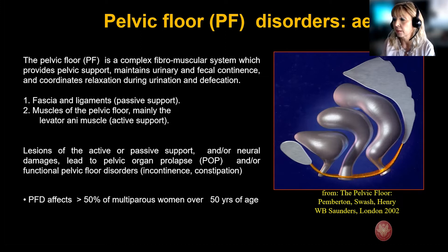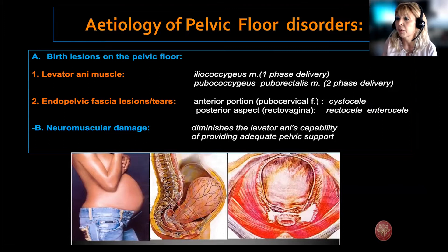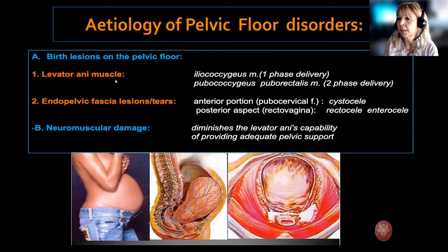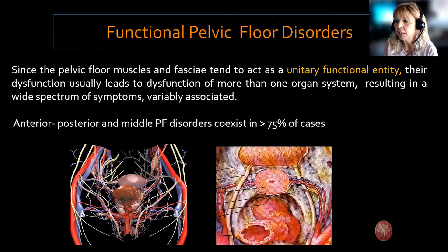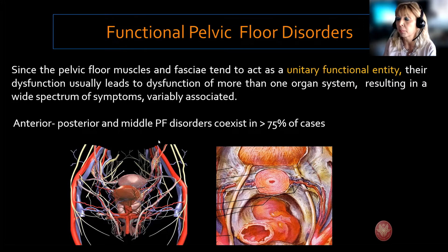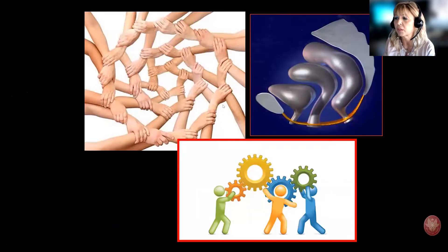The reason is clearly explained in this slide. In the vast majority of cases, these disorders are due to birth lesions during delivery. Lesions may occur at the level of the muscle, ligaments, fascia, or neural structures. In any case, they determine lesion of the entire pelvic floor. For this reason, the pelvic floor is considered a unitary functional entity, and anterior, middle, and posterior pelvic floor disorders usually coexist in the majority of cases. It's important to assess dysfunction in a unitary way and to cooperate between different physicians.